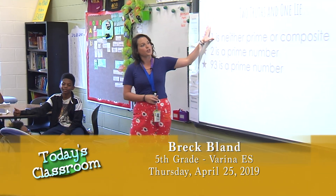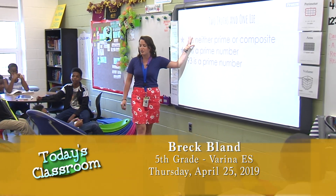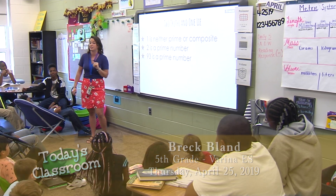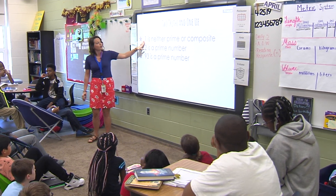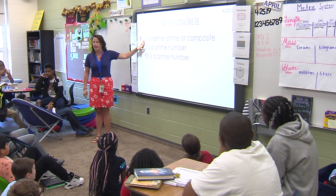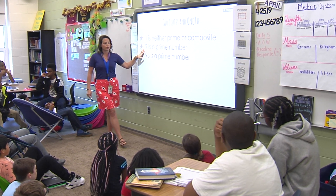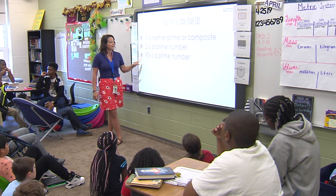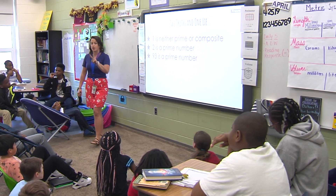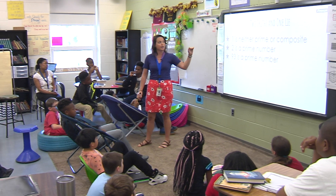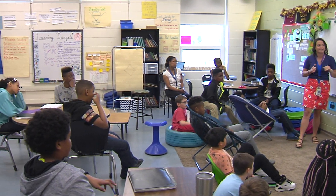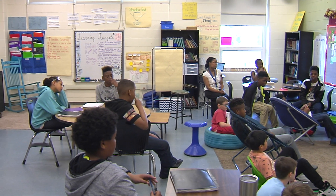Alright boys and girls, let's start with our two truths and one lie. I want you to think about it quietly to yourself. I'm going to read them out loud. One is neither prime or composite. Two is a prime number. Ninety-three is a prime number. Remember, there are two things that are true and one thing that is a lie. I'll give you about thirty-ish seconds to think about it and then we're going to share with our neighbors.